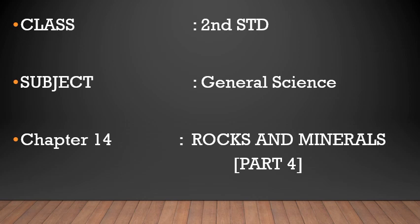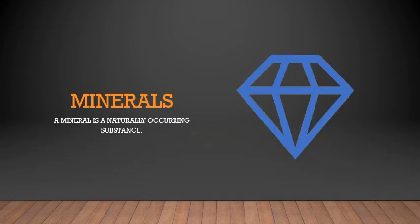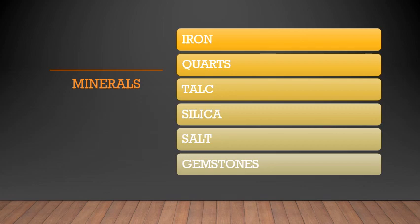Then we saw how the formation of soil takes place. Then we learned what minerals are. Minerals are naturally occurring substances. They have some physical properties and internal structures. Minerals are not created by any life processes. Examples include iron, quartz, talc, silica, salt, and gemstone.